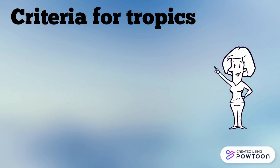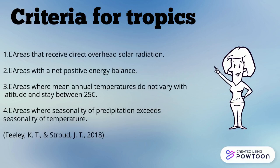First, areas that receive direct overhead solar radiation. Second, areas with a net positive energy balance. Third, areas where mean annual temperature does not vary with latitude and stays around 25 degrees. Fourth, areas where seasonality of precipitation exceeds seasonality of temperature.